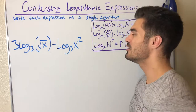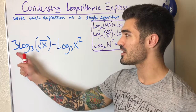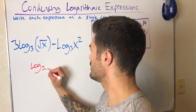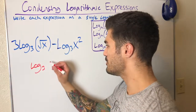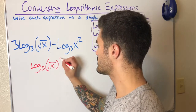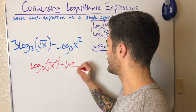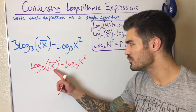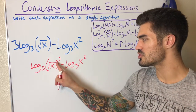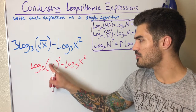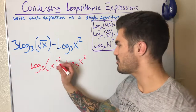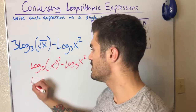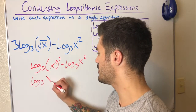Next example: I'm rewriting these as a single logarithm. This time I do have a factor out in front, so I'll bring this up to the exponent — I always have to do that before combining. That becomes square root of x, cubed. I can do one more thing before combining: I'll rewrite this as a single exponent. Square root is just the one-half power, and when I have a power raised to a power I multiply, so I have 3 times one-half.